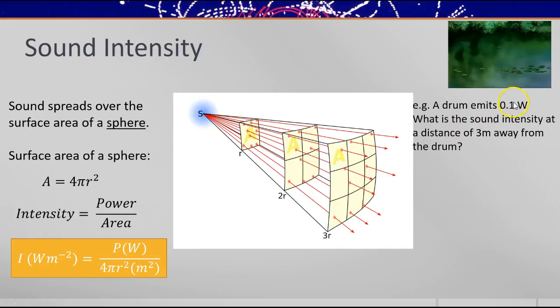So here's an example. If a drum emits 0.1 watt of power, sound intensity at a distance of three meters away would be given by this formula. So power divided by area, which is 8.8 × 10⁻⁴ watts per meter squared.